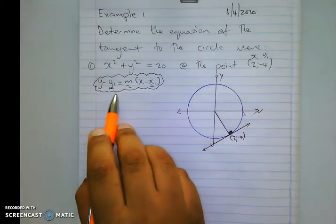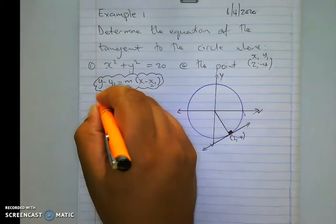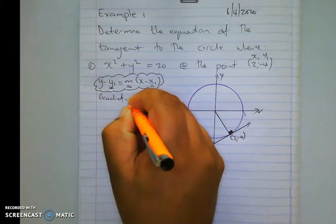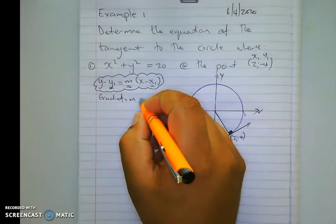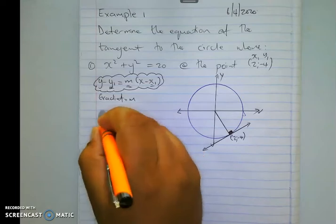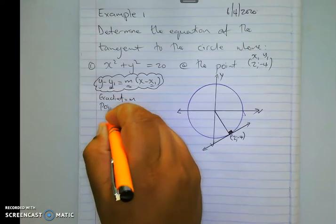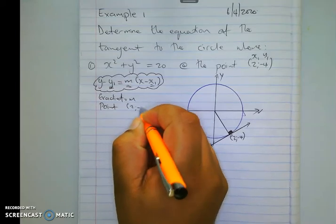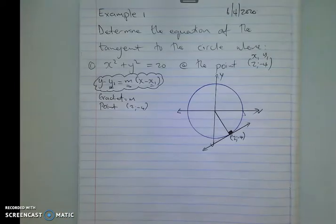Next thing I need to do is write that down just to keep it in front of me. So I need my gradient, that's the one thing I need. I also need a point, and that point is already given to me in this example. It's (2, -4).